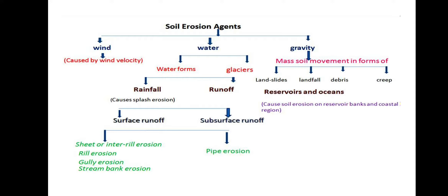The main characteristics for erosion are wind, water, and gravity. Wind is caused by wind velocity; water forms include rivers and glaciers; gravity causes mass soil movement in the form of landslides, landfall, debris, and creep. Water forms include rainfall and runoff, which cause splash erosion, surface runoff, and subsurface runoff.